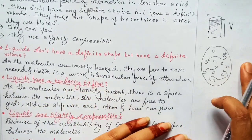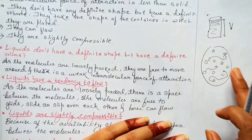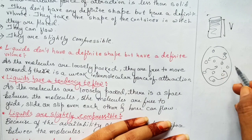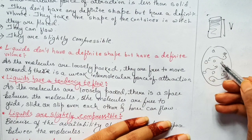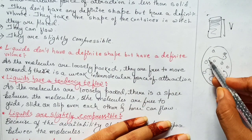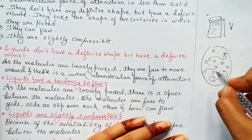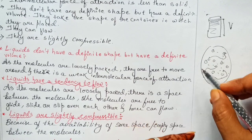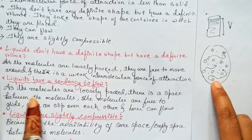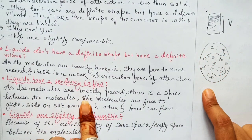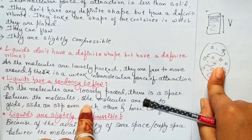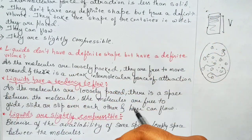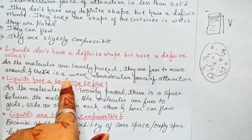Next point: liquids have a tendency to flow. Liquids can easily flow. Why will they flow? Because the molecules are not closely packed — they are loosely packed. There is space between the molecules. The force of attraction between the molecules is very low. That is why liquid molecules flow easily. As the molecules are loosely packed and there is space between them, molecules are free to glide, slide, or slip over each other. That means the molecules can flow easily.